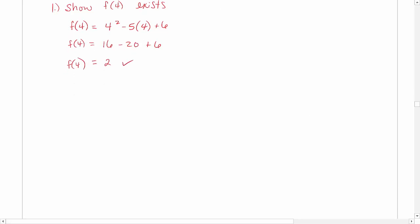So we're going to get that f of 4 is equal to 2. So it definitely exists because we've got a defined number there. The second part of the test is to show that the limit as x approaches 4 of f of x exists.